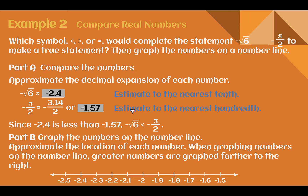Comparing these, negative 2.4 is less — it's further negative — than negative 1.57. So we use the less than symbol: the negative square root of 6 is less than negative pi over 2. Graphing them on the number line: the negative square root of 6, approximated at negative 2.4, is over here. If you approximated it to further decimal places, it's actually a little bit further to the left. Negative pi over 2, which was negative 1.57, we would plot here.